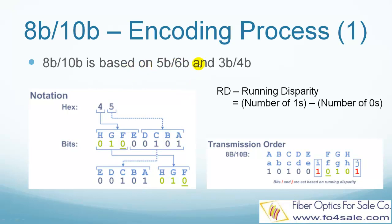8B10B line code is based on 5B6B and 3B4B codes. Now let's see how an 8-bit byte is encoded. In the left figure, the hexadecimal word 4-5 is encoded as an 8-bit byte. 4 is coded as 0100, it occupies position EFGH. 5 is coded as 0101, it occupies position ABCD. The 8-byte is then split to a 5-bit ABCDE and a 3-bit FGH group. The positions of these two groups are then switched in the transmission process.